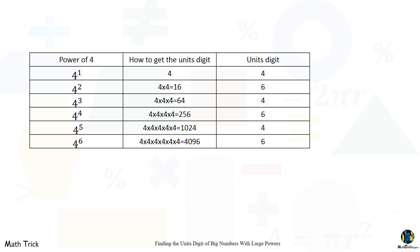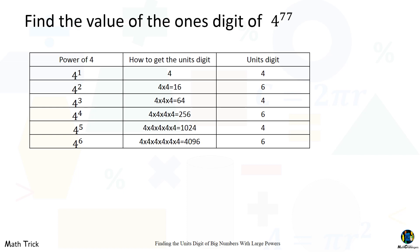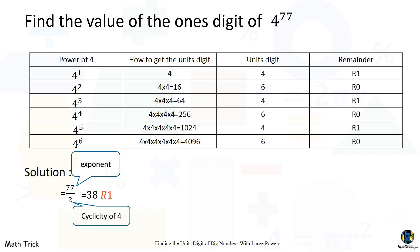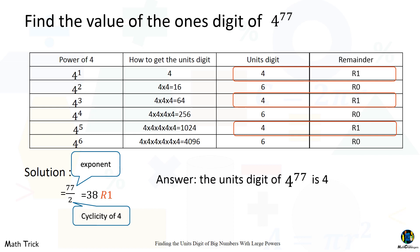Now let us use the concept of cyclicity to calculate the unit's digit. To find the unit's digit of four raised to the 77th power, divide the exponent by two. Seventy-seven divided by two is thirty-eight remainder one. Since there are only two possible unit's digits in a power of four: if the remainder is one, the unit's digit is four; if there is no remainder, the unit's digit is six. Therefore, the unit's digit of four raised to the 77th power is four.